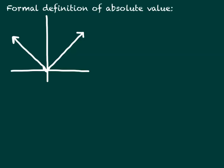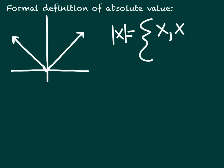Let's start with a formal definition of absolute value, and here I've sketched a graph of it. If I were to write this as a piecewise function, the absolute value of x is going to be — looking at this side — the line y equals x, for all x greater than or equal to 0. And on this side, it is negative x, for x less than 0.